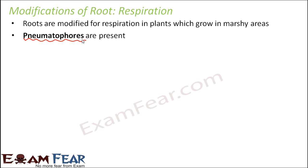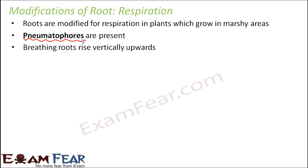For plants in swamps or marshy areas, the oxygen content is less. Therefore, in order to adapt to those circumstances, specialized structures develop from roots which act as respiratory organs. These specialized structures are known as pneumatophores, also called breathing roots, because they help in exchange of gases.